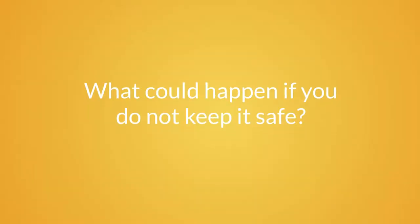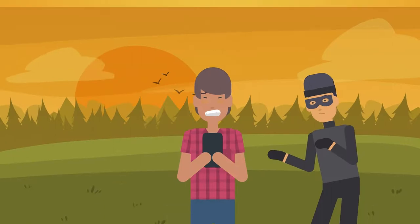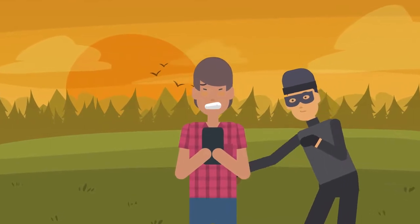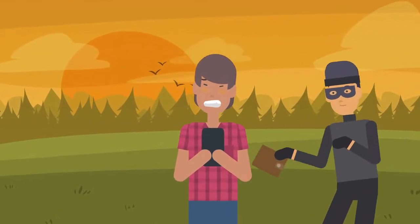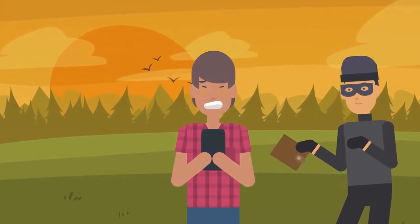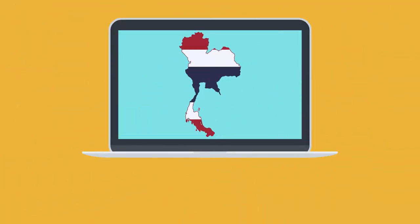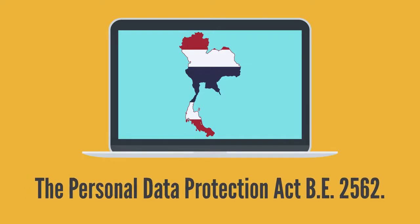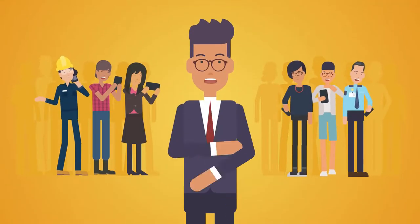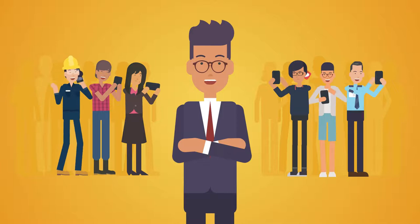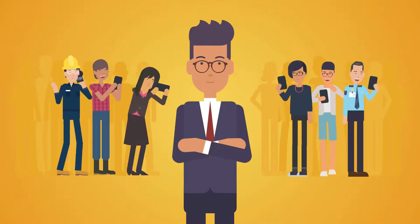What could happen if you do not keep your data safe? Not every platform is safe or can keep data securely, which is why some people get their personal data stolen. To protect people from having their personal data stolen, Thailand has passed its own data protection law aligned with international law: the Personal Data Protection Act, BE-2562. Let us together explore how this law can protect anyone who lives and works in Thailand.